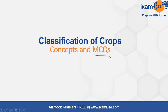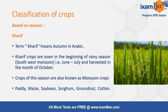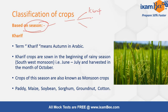Now the classification can be on several bases. Here we will study first of all on the basis of season. On the basis of season, the crops can be classified into three: first one is the Kharif, next is the Rabi, and the third one is Zayad.